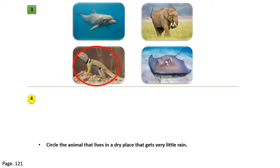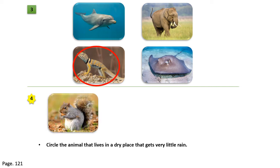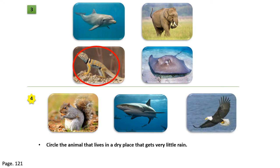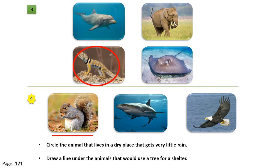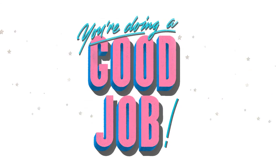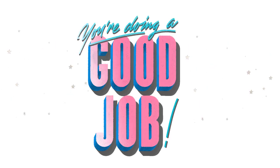Moving on to question number four, we have a picture of a squirrel, a shark, and an eagle. Our question is to draw a line under the animals that would use a tree for shelter. We are going to draw a line under the squirrel and under the eagle — both animals use a tree for shelter. The shark needs the ocean for what it needs to live and grow. Great job everybody — remember to attend our Zoom classes as we will talk more about different interesting topics every week. Goodbye.